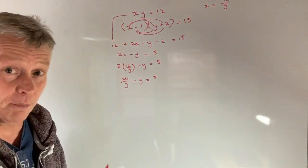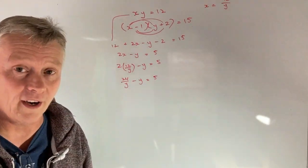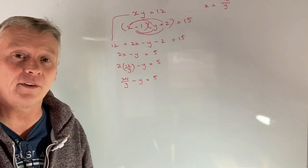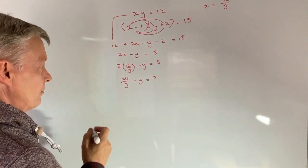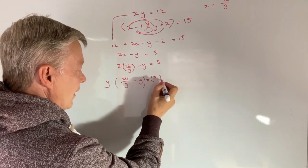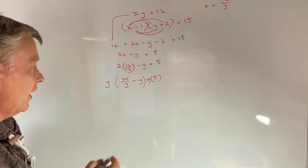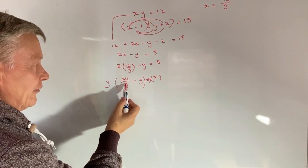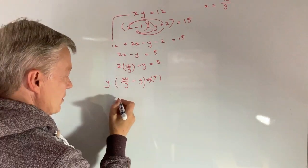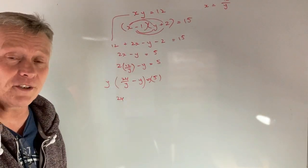So we're going to get 2 and rather than writing x, I'm going to get 12 over y minus y equals 5. I appreciate it doesn't look great at the moment, but it will kind of work itself out. It's not too bad. So 2 times 12 is 24 over y minus y equals 5.